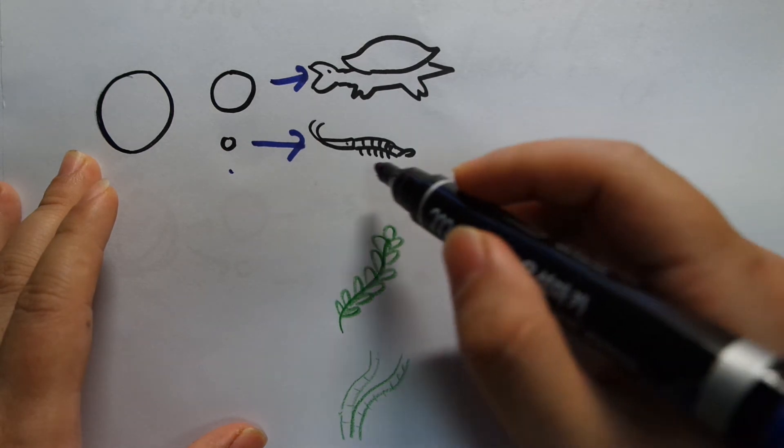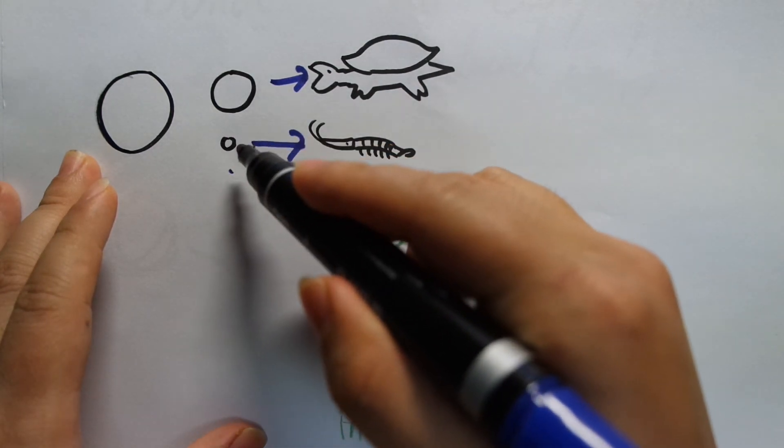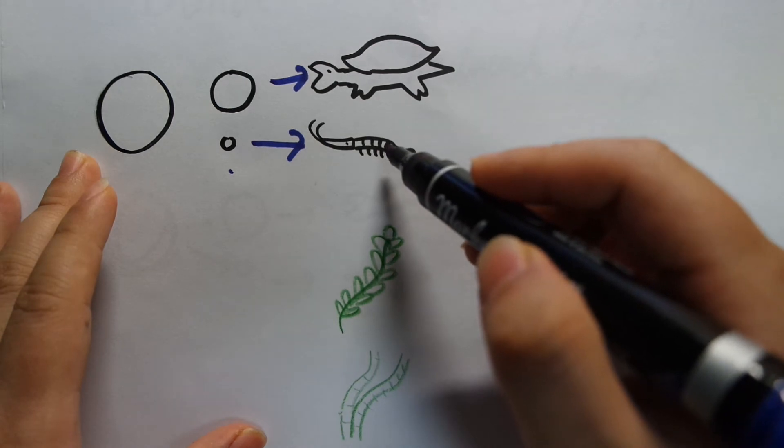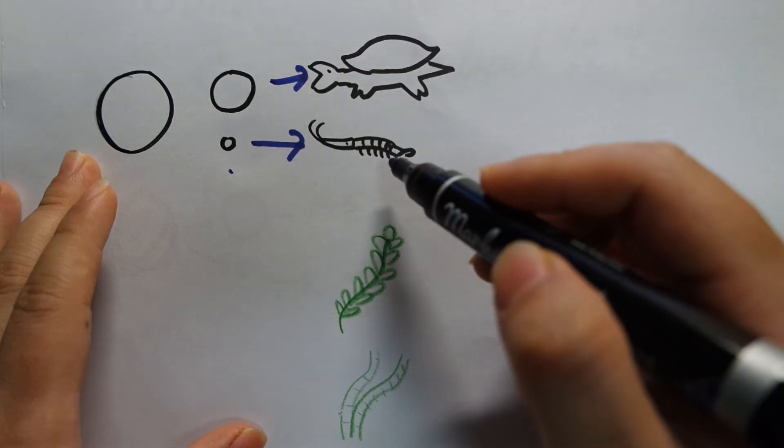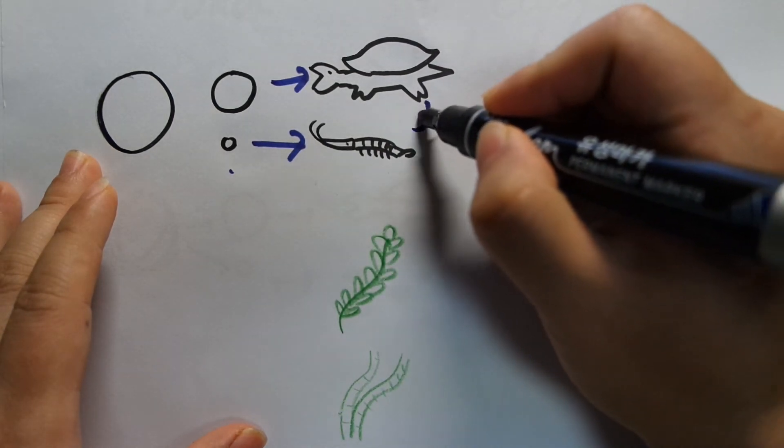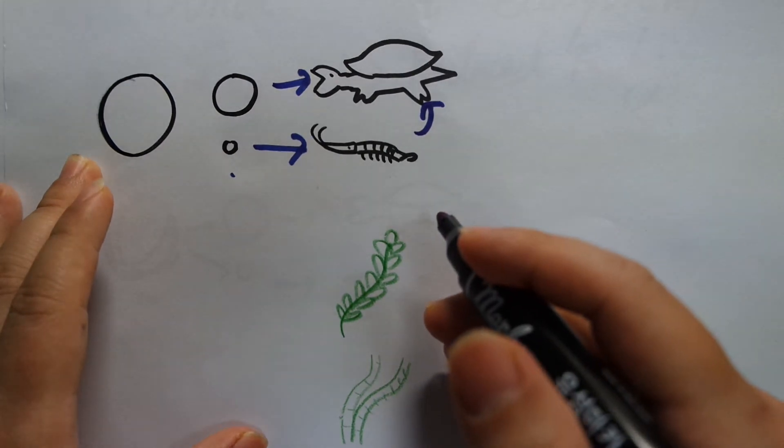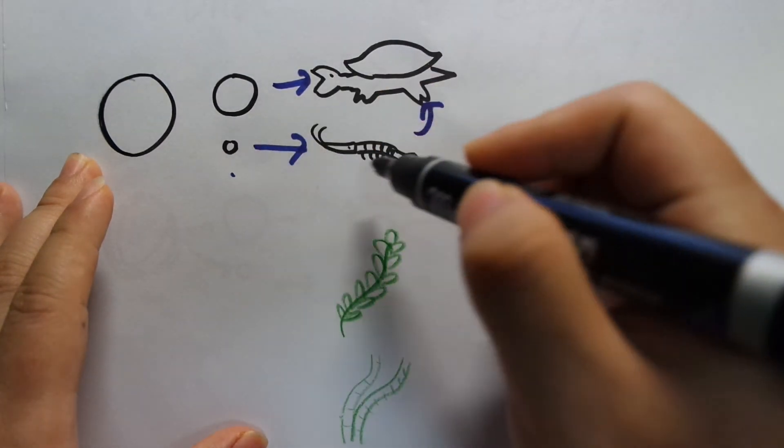And what happens here is the shrimp has salvaged this food. And what happens to the shrimp? The shrimp live on and sometimes they will get eaten by the turtles. So you have a loop going on here.